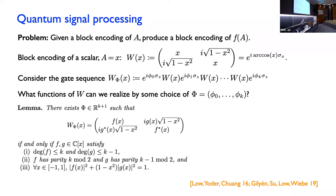The characterization shows that the operator you implement is a polynomial F. If you have a sequence involving K uses of U, then F can be a polynomial of degree at most K, and G has to have degree at most K−1. There are parity conditions relating to symmetries, and constraints on the squares of F and G.